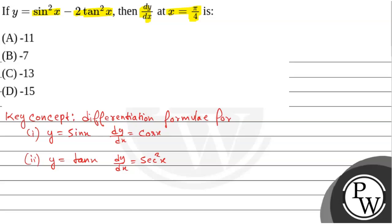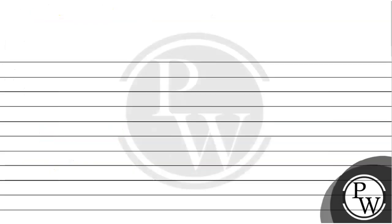Now, given that, y is equals to sin squared x minus 2 tan squared x.